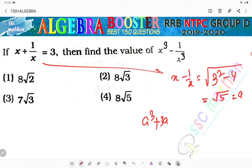So it will be root 5 cube plus 3 into root 5, that is 5 root 5 plus 3 root 5, equals to 8 root 5. Option 4 is the correct answer. Okay, thank you, bye bye, stay tuned for the next class.